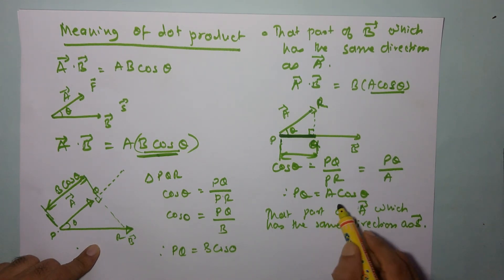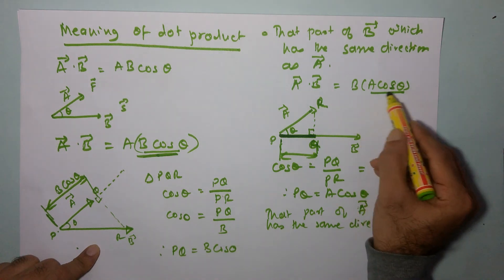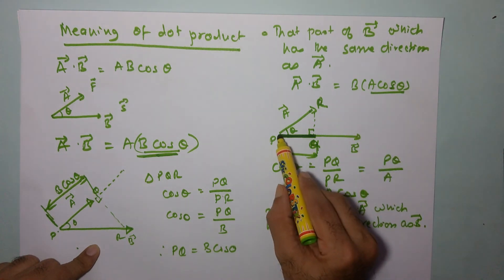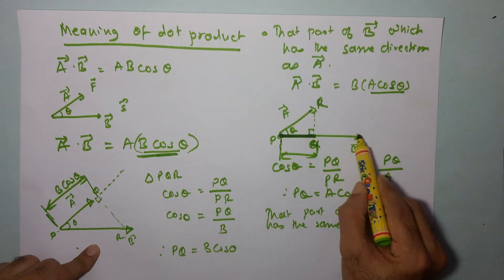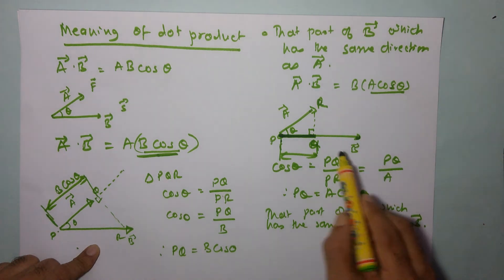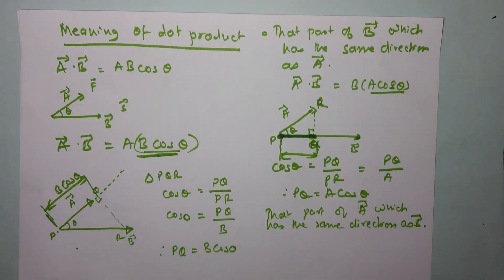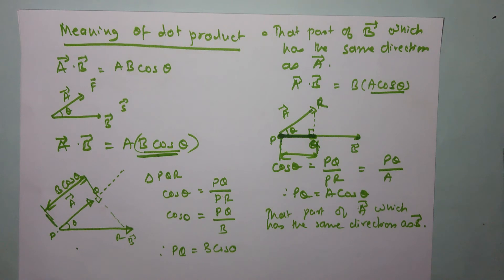When I multiply b into a cosθ, I am taking two vectors in the same direction, and therefore direction loses its significance. Hence, we say that a·b is the scalar product.